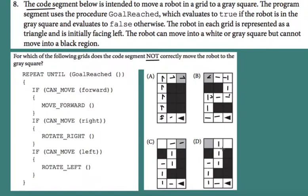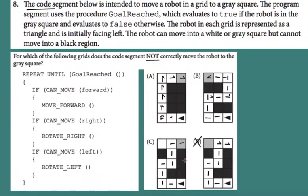After turning right, it faces this direction. Can it turn left? No. It moves forward — and we are stuck here. After arriving at this position, can it move forward? No. Can it turn right? No. Can it turn left? No. The robot is completely stuck and never reaches the goal. So the answer is D. If you have any questions, please leave a comment. Thank you for watching.